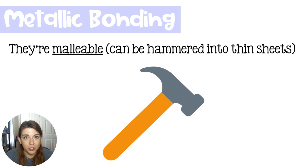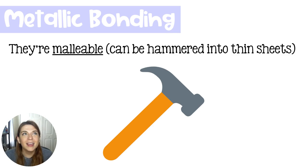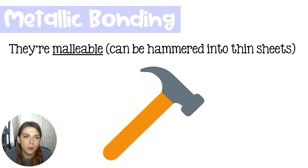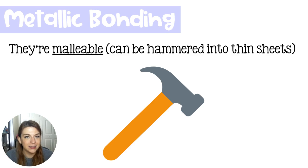Metals are malleable. If you think of a car — if you were to hit a car with a hammer or a baseball bat, if you hit the metal it is going to dent. If you hit the glass, it's going to shatter, it's going to break. That's the difference between brittle and malleable.